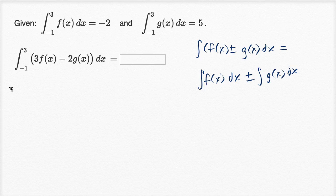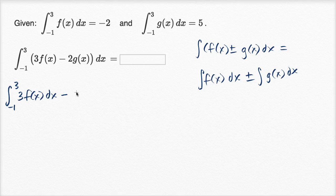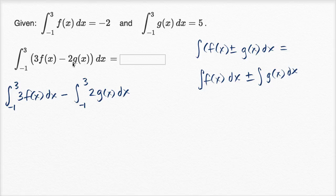So this is going to be equal to the definite integral from negative one to three of three f of x dx, minus the integral from negative one to three of two g of x dx. All I did is split it up — taking the integral of the difference of these functions is the same as taking the difference of the integrals of those functions.